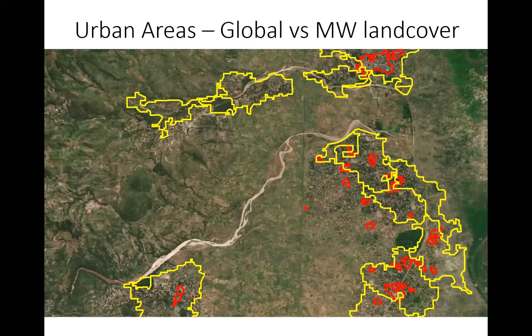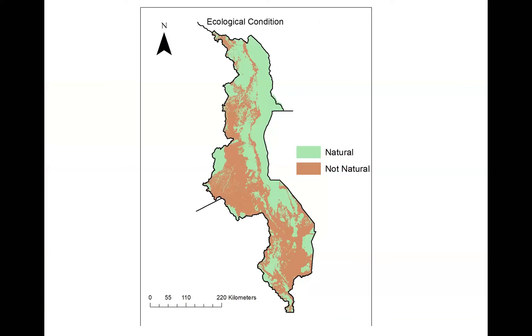The next slide shows the urban layer. We had two urban layers — one from our land cover and one from the global EU urban areas map. When we zoomed in, we found the Malawi land cover map picked up some areas the EU one did not, and vice versa. So for the urban layer we used both files to define our urban areas and get good coverage. The outcome was the ecological conditioning map, and this is very true for Malawi, where many places are not natural and quite a few are still natural.